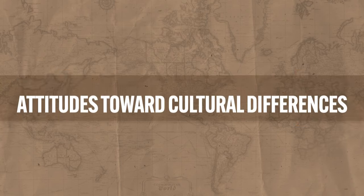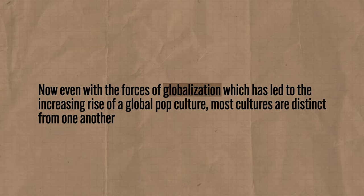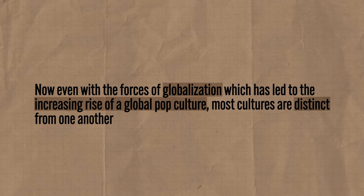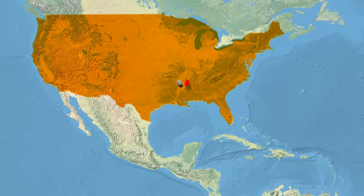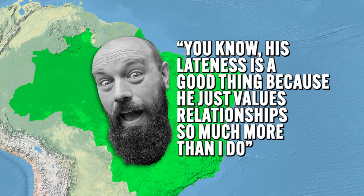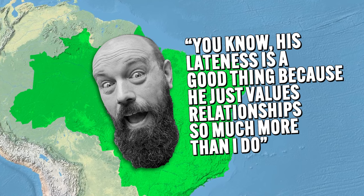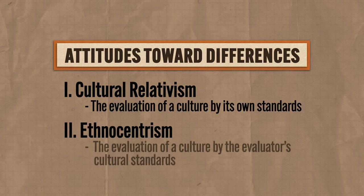The last thing we need to talk about in terms of culture is attitudes towards cultural differences. Even with the forces of globalization, which has led to the increasing rise of a global pop culture, most cultures are distinct from one another. We have two terms to describe the attitudes people have towards those cultural differences. First is cultural relativism, which is an evaluation of a culture by that culture's own standards. Cultural relativists look at cultures different from theirs and embrace them, understanding that cultures arise from distinct beliefs just as their own culture does. For example, an American goes to Brazil for an appointment and the Brazilian is 30 minutes late. If that American is a cultural relativist, she might initially be annoyed but will come around and say his lateness reflects that he values relationships so much more. On the other side, we have ethnocentrism, which is the evaluation of a culture by the evaluator's own cultural standards. Ethnocentrists judge cultural differences as good or bad based on their own cultural assumptions — that guy is late and that makes him and his culture dumb.